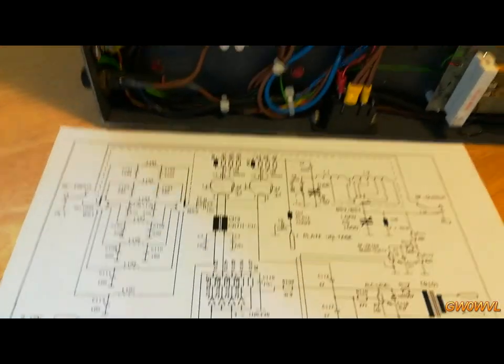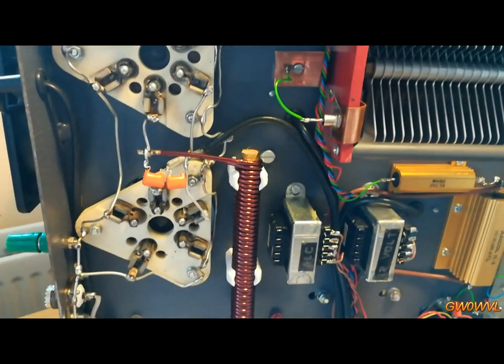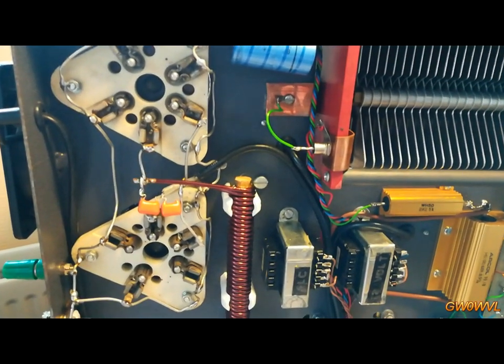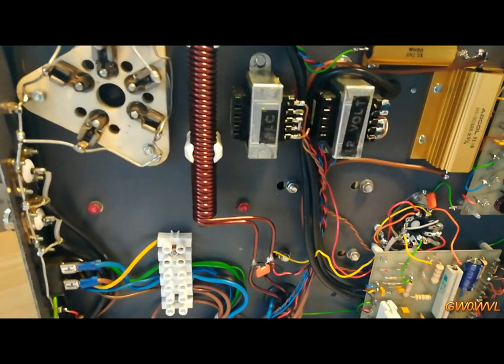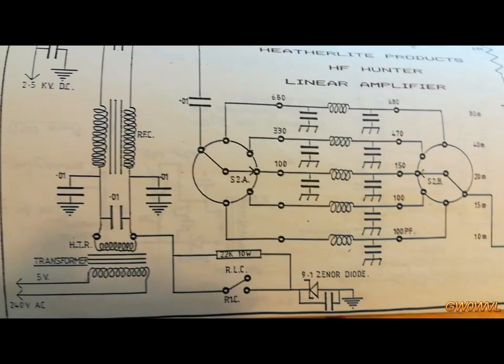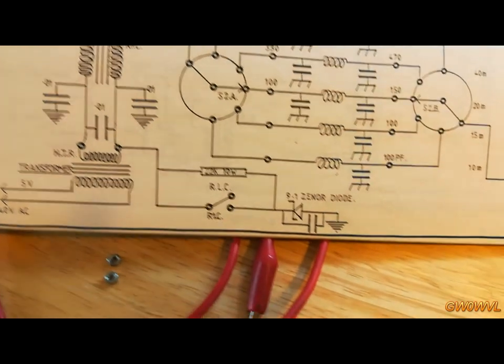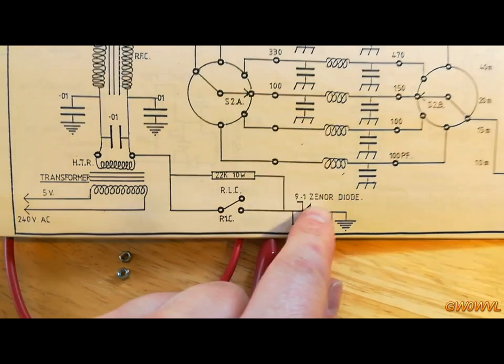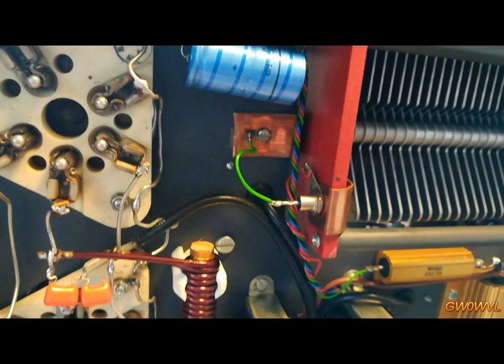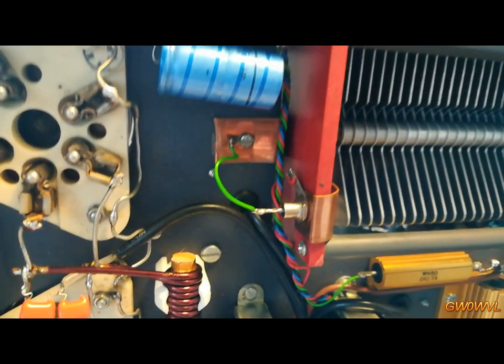Before I owned this Explorer amplifier, I used to own a Hunter, which is basically a similar amplifier but with only the one 3500 valve in it. And I've still got the manual for it. And looking at the Hunter, as we can see, the single valve, you come down here and that looks more closer to the diagram. And the schematic or the way to wire it up for the Explorer.